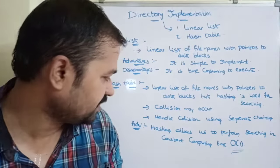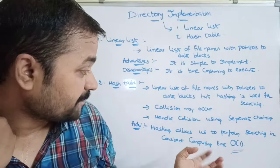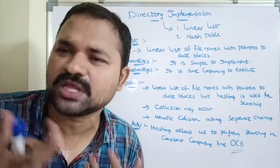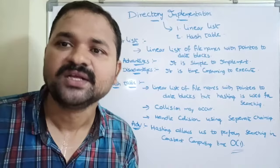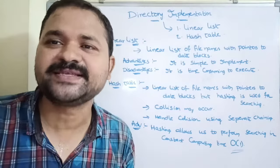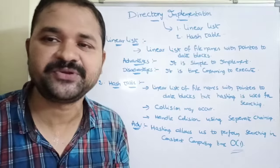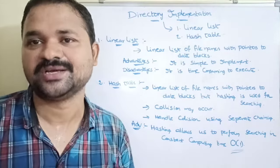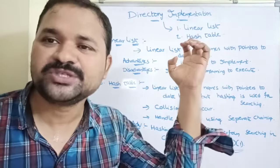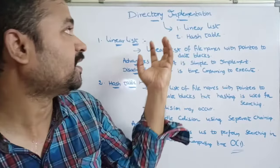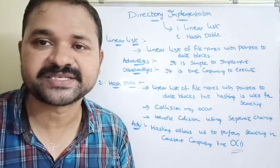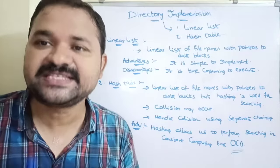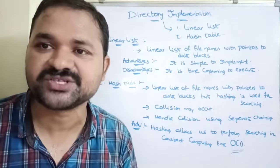The major advantage of the hash table approach is that it performs searching in constant computing time, that is, in only one comparison. So by using these two ways we can implement directories: linear list as well as hash table. This is about directory implementation.